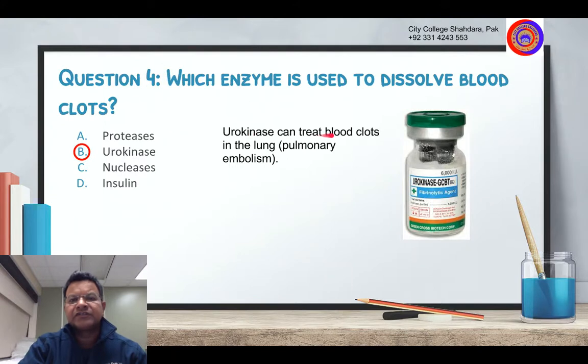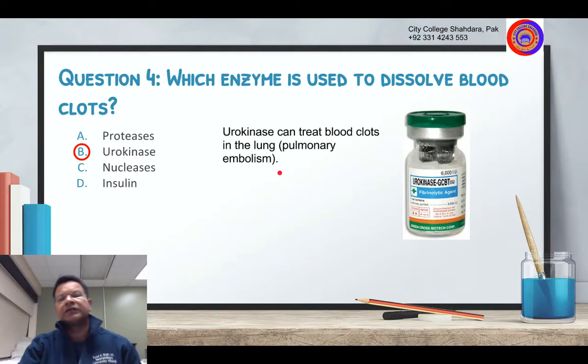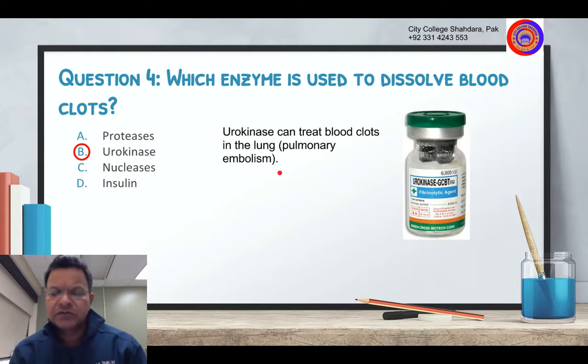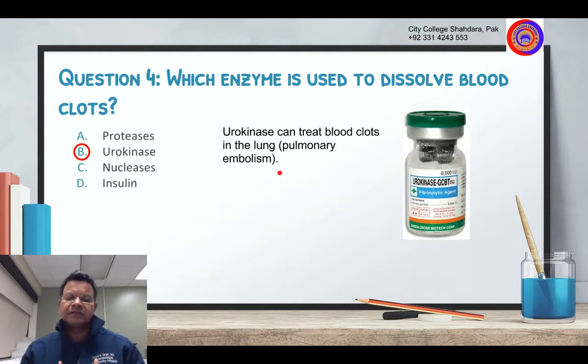Urokinase can treat blood clots in the lung — pulmonary embolism. It can treat blood clots and is used in a hospital setting.